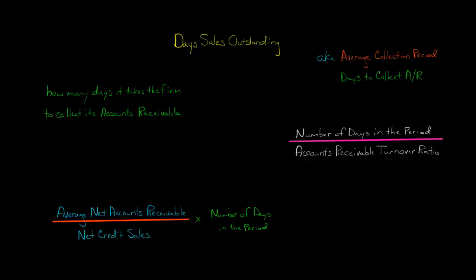In this video, we're going to discuss how to calculate days sales outstanding, which is also known as the average collection period, sometimes called days to collect accounts receivable. Basically, days sales outstanding tells you how many days it takes for a company to collect an account receivable.